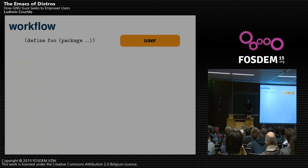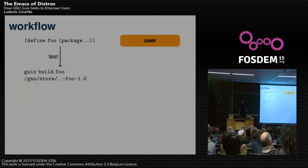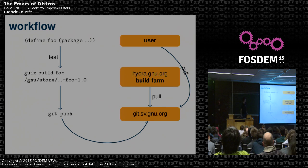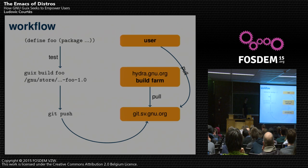So what's the workflow like? Basically you have Geeks developers, or Geeks users, writing those package definitions. When they are done, they test the definition locally — you can always write a package definition, run 'geeks build name-of-your-package,' and make sure it actually works. Then if you have commit access, you just push it to the Geeks repository. Finally users can pull recipes from upstream from Geeks, and from there they can install the new package. That's a very straightforward workflow. In addition, we also have a build farm, which is basically doing continuous integration of the distribution. From there you can fetch binaries if you want to — the tool will automatically use binaries if they are available, and if not, it will build things locally.